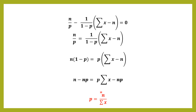This gives p̂ = n / Σx. Now we check whether the log-likelihood function is indeed maximized at p̂ = n/Σx by computing the second derivative of equation (1) with respect to p.